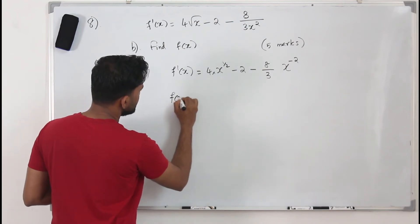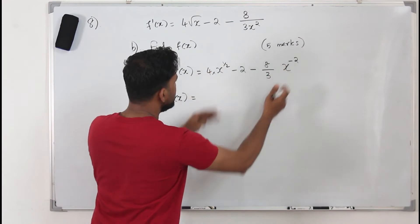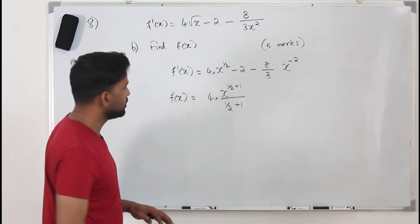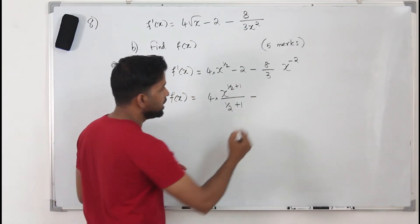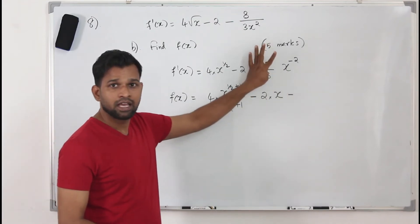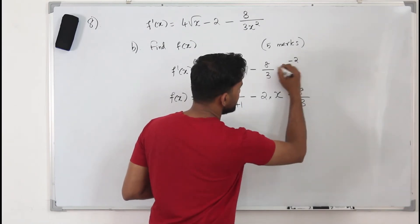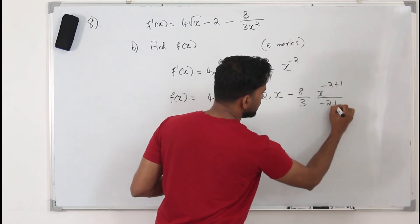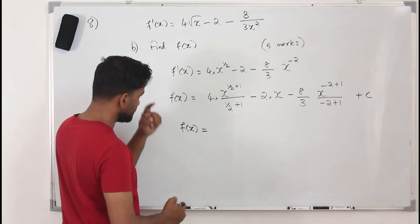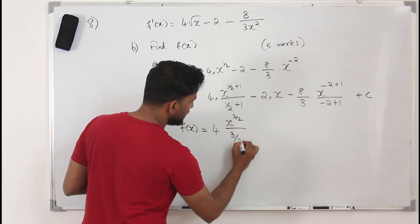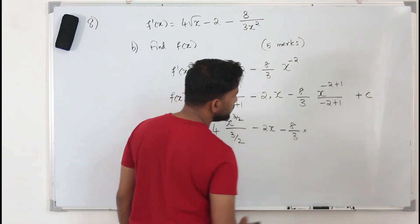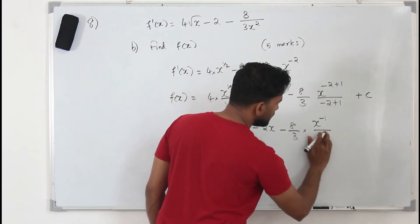When you integrate f'(x), it becomes f(x). The integration of x to the power n is x to the power n plus 1, divided by n plus 1. When you integrate a constant alone it becomes constant times x; if the constant is with an x term, keep the constant as-is and integrate the x term. So f(x) equals 4 times x to the power 3/2 divided by 3/2, minus 2x, minus 8 over 3 times x to the power negative 1 divided by negative 1, plus c.